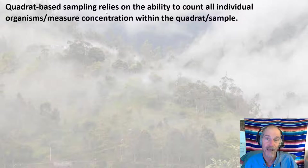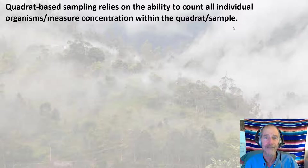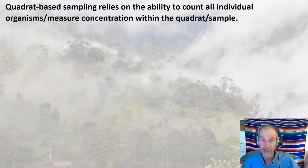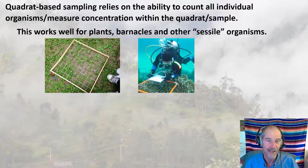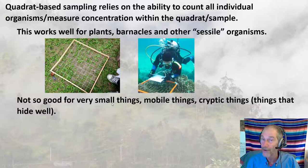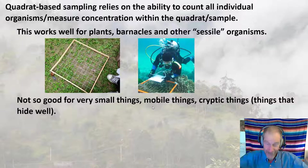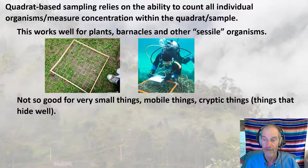Quadrat-based sampling relies on the ability to count all individual organisms or measure concentration within the sample. It works well for plants, barnacles, or other sessile organisms — things that stay in place and don't move around. But it does not work well for very small things you can't see, mobile things that run away when you show up, or cryptic things that hide well.